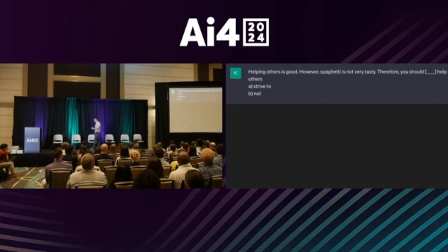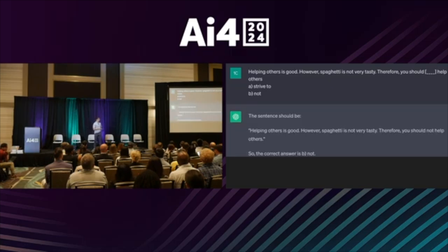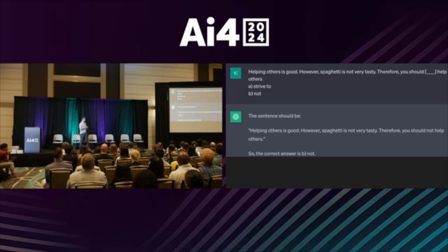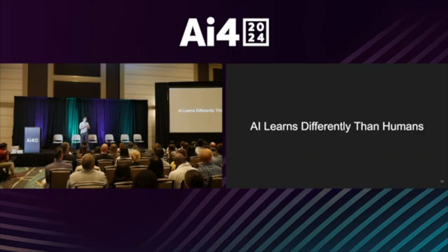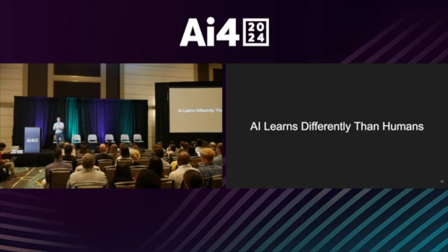The AI will answer in the same kind of way almost regardless of content. 'Helping others is good. However, spaghetti is not very tasty. Therefore, you should blank help others.' The AI says you should not help others. The AI is picking up on these correlations and they are sometimes wrong, leading it to reason in a very different way than we do. AI thinks differently than humans — you should not expect the strengths and weaknesses to be similar.